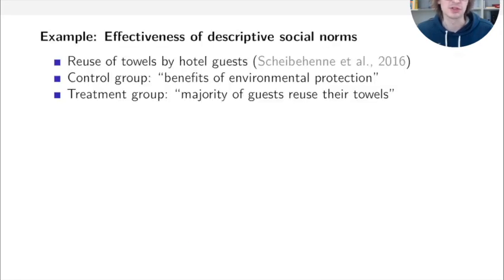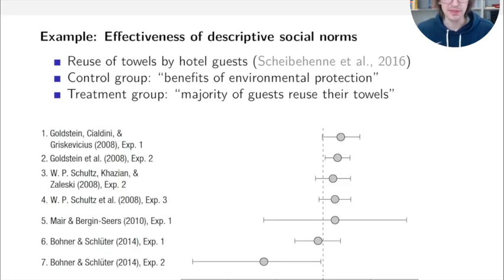The example here concerns the effectiveness of descriptive social norms — specifically, how we can make hotel guests reuse their towels. The control group were simply told to please reuse their towels because it's good for the environment, while the treatment group were told that the majority of guests reuse their towels. Effect sizes across seven studies were quantified by log odds ratios, where positive values mean the treatment was effective.